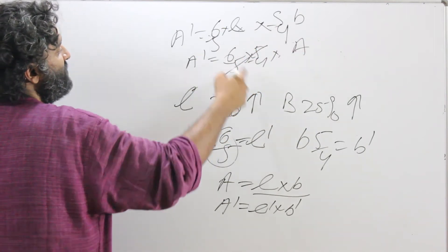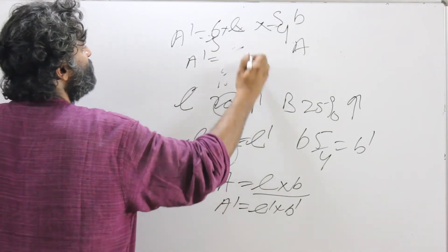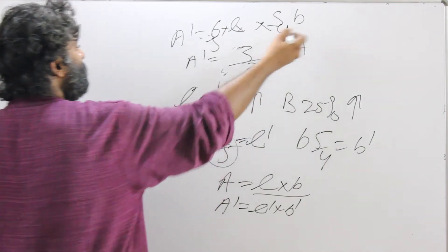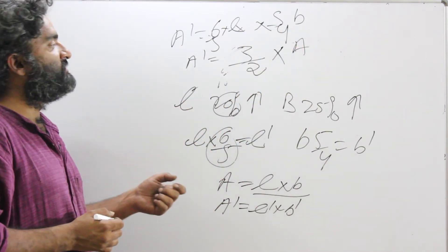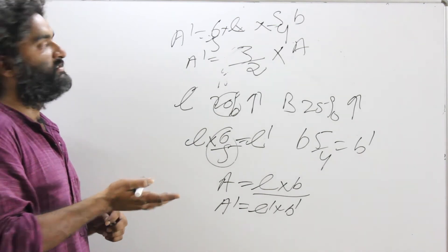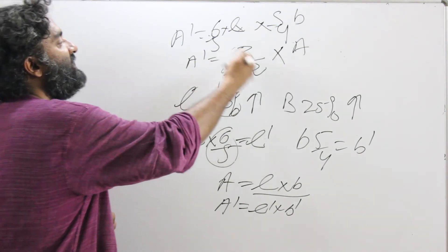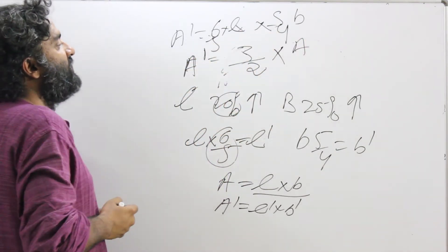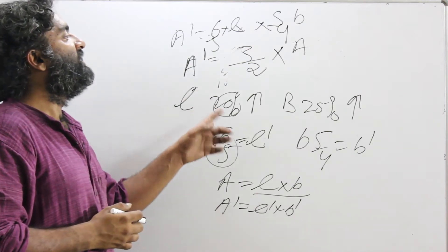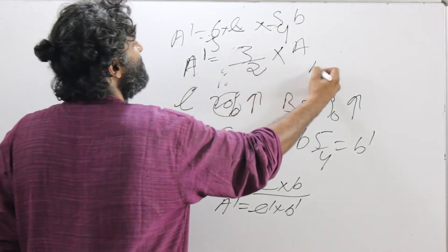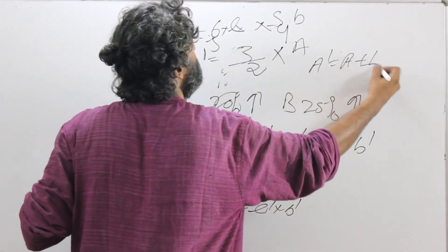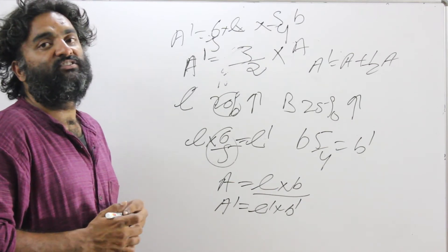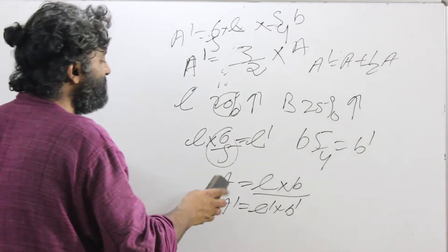The 5 by 5 cancels. We get 6 by 4, which simplifies to 3 by 2. So new area is 3 by 2 of old area. 1 by 2 is 50%, so 3 by 2 becomes 150%. The new area is 150% of the old area, or the new area is 50% more than the old area. So the area has increased by 50%. But this was a long way of doing it.